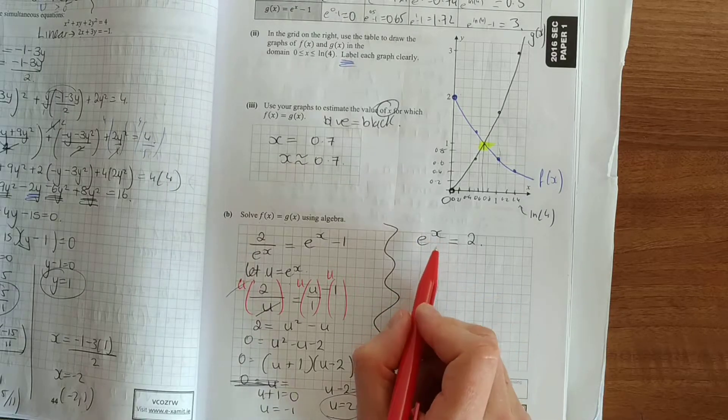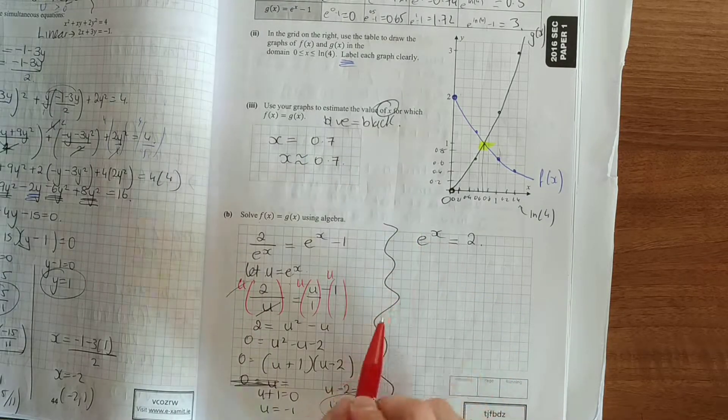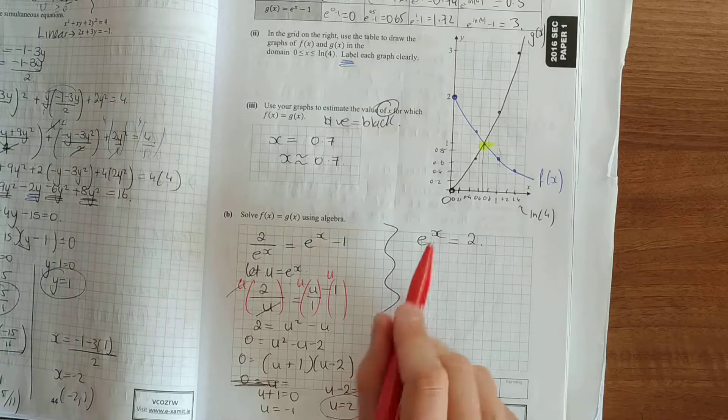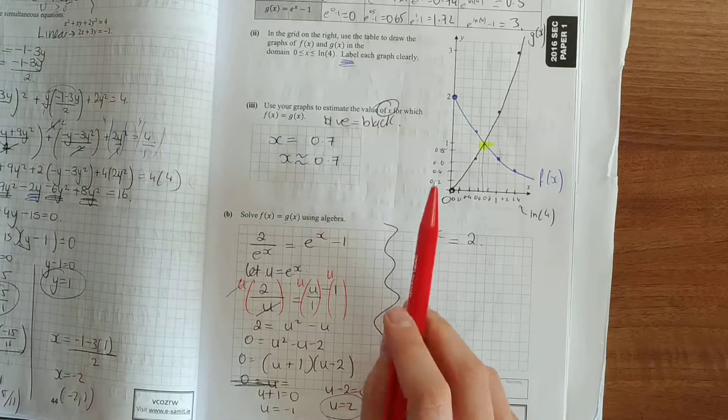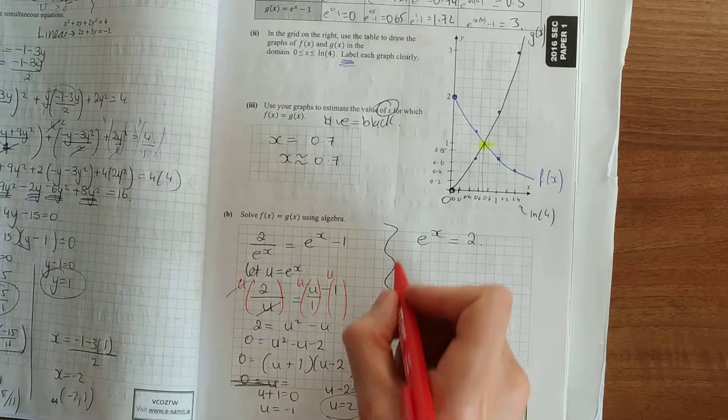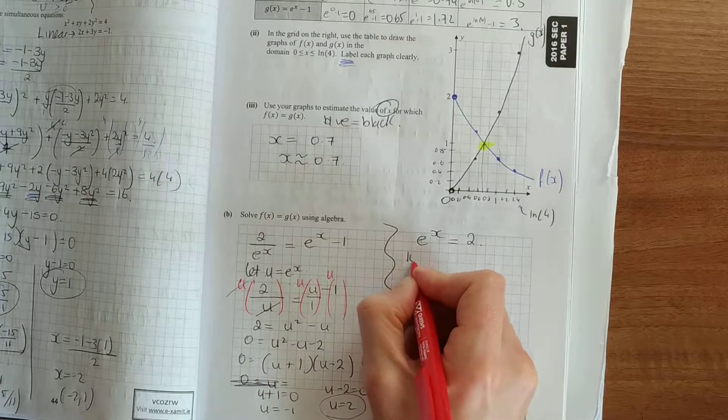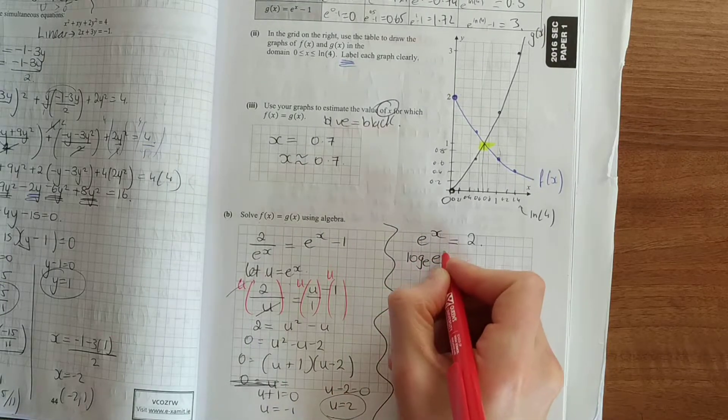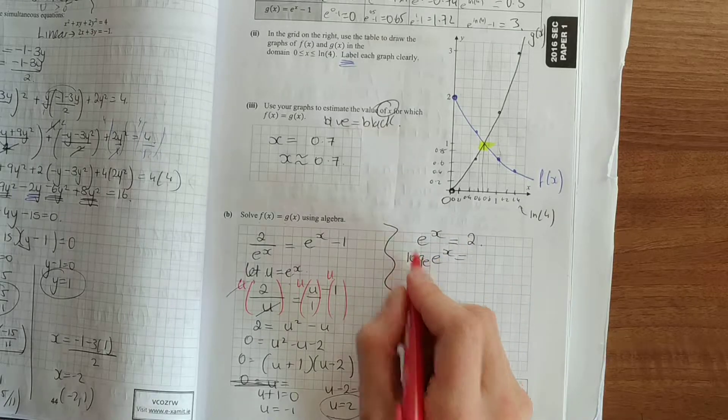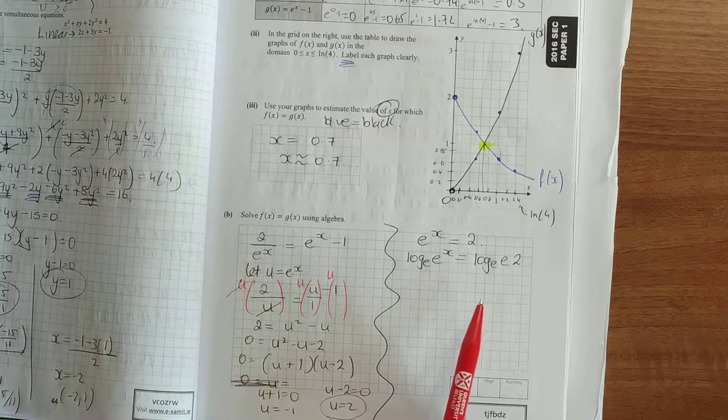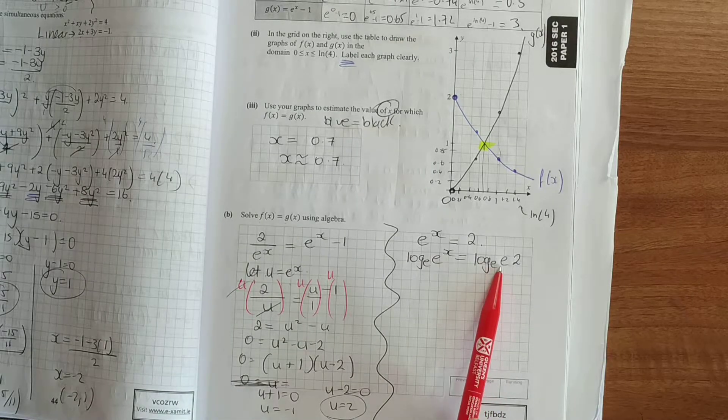Now, in order for us to solve this equation for x, we must apply logs. This is our power. When you want to solve an equation in which you're trying to solve the letter or the variable which is the power, you apply logs. You must go log to the base e. Log to the base e of e to the x. And whatever you do to one side, you must do to the other side. Log to the base e of 2.